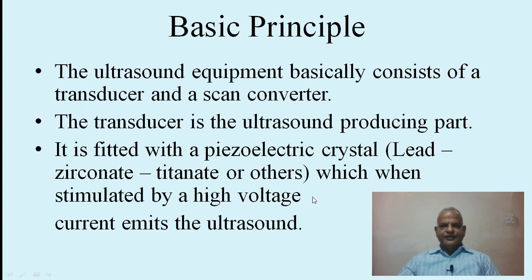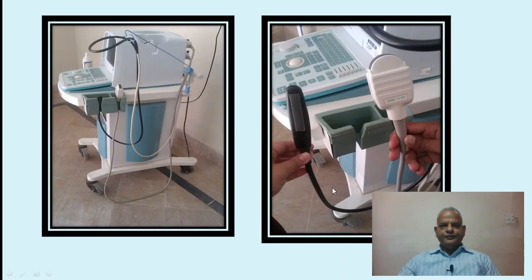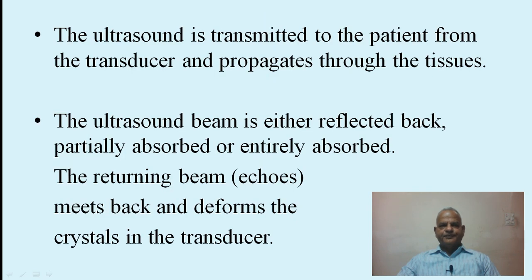Here you can see the types of probes and ultrasound machines. This is showing the types of probes — this is the linear array probe, which is used for transrectal diagnosis in most large animal species. The ultrasound is transmitted to the patient from the transducer and propagates through the tissues.